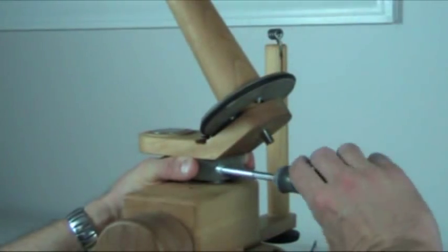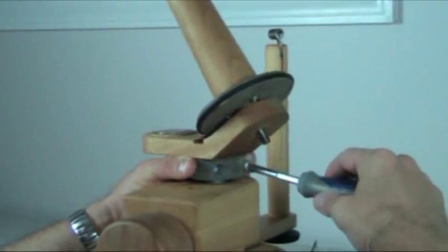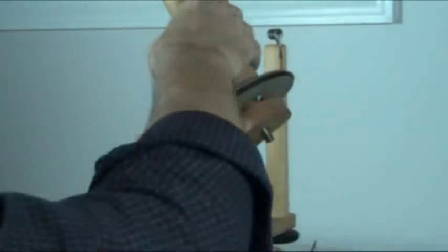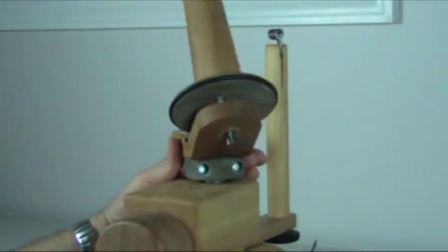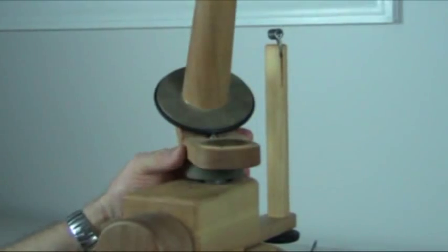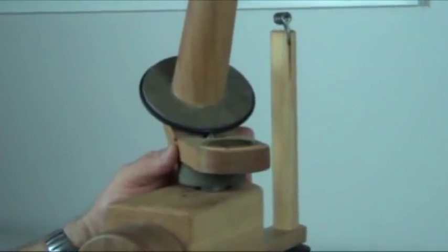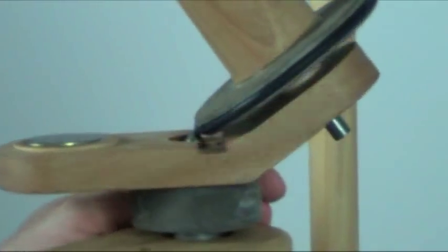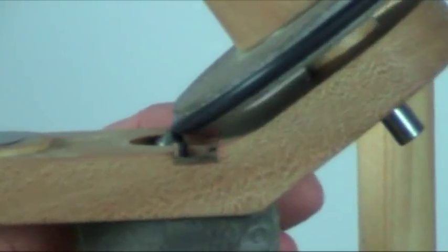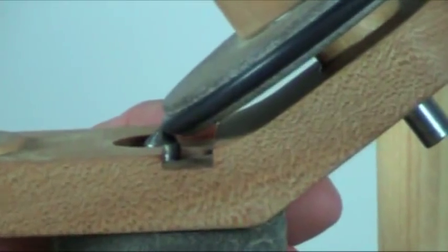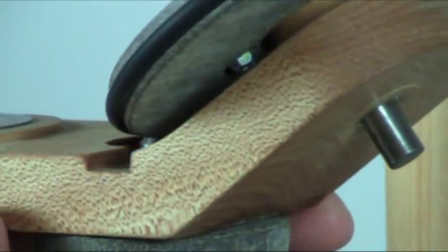So as it makes contact, I tighten it up. And I might test to see if it spins. Now if it's hitting too high, and this one looks like it may be hitting too high on that shaft, there's a number of things I can do. I can take it off again, of course.